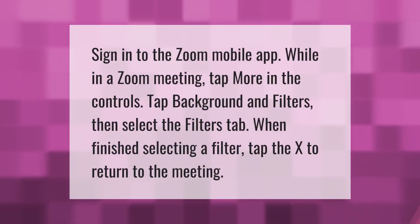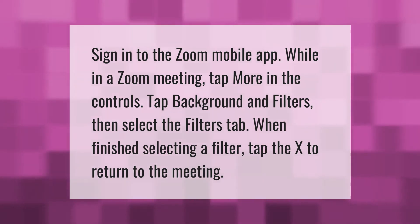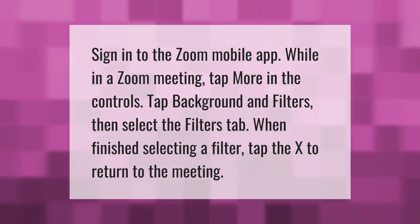Sign in to the Zoom mobile app. While in a Zoom meeting, tap More in the controls, then tap Background and Filters and select the Filters tab. When finished selecting a filter, tap the X to return to the meeting.